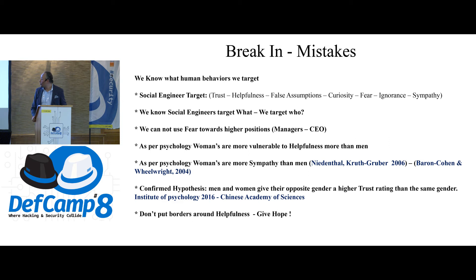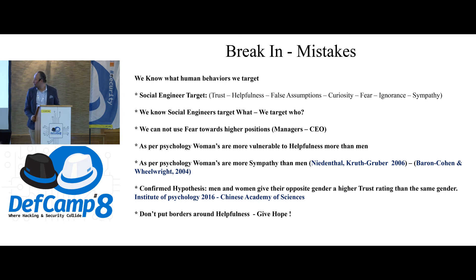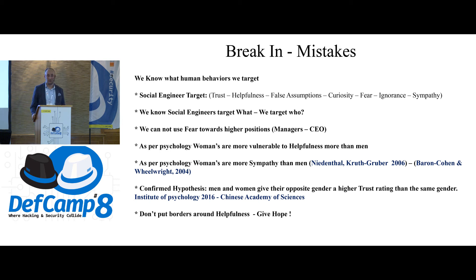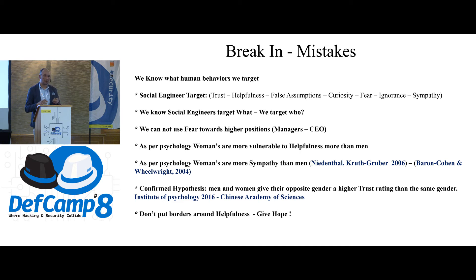Research from the Institute of Psychology, 2016, Chinese Academy of Science, shows that men and women always have higher trust in the opposite gender than the same gender. I recommend reading that paper if you're interested in trusting gender dynamics — it's very useful. So we tend to trust the opposite gender more than our own.